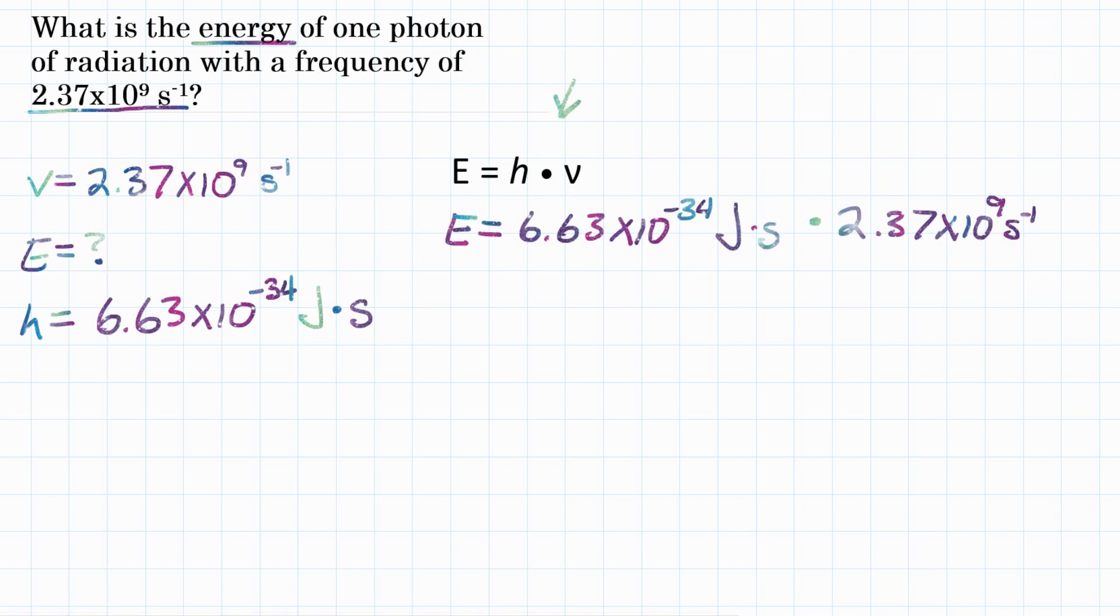Let's look at our units. Let's see if anything cancels. So in Planck's constant, we have joules times seconds. And in our frequency, we have seconds to the negative 1. Seconds to the negative 1 is like saying 1 over seconds.